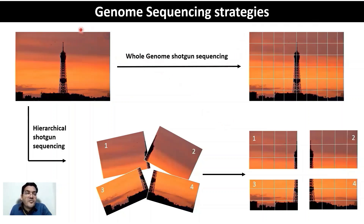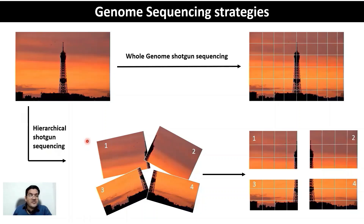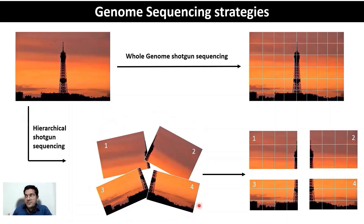However, when sequencing a genome as complex as the human genome, you have to follow what is known as the hierarchical shotgun sequencing strategy, where you first break the genome into larger pieces. These larger pieces then have to be cloned into large insert vectors — specifically your bacterial artificial chromosomes and yeast artificial chromosomes. That is the context we have been building to bring you back to the topic of vectors. These would represent your large insert vectors.